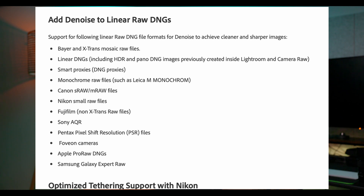You can use monochrome files such as Leica M Monochrome. Leica camera is on the way. Canon S-Raw, M-Raw. You can use S-Raw files. Fujifilm, Sony, Pentax. Apple ProRAW DNG. Samsung Galaxy Raw — Samsung Galaxy S24, S23.